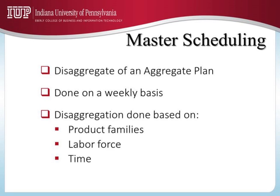Finally, disaggregation can be done based on time. That is, if the Aggregate Plan is for the next 6 to 18 months on a monthly basis, the disaggregation of the Master Schedule can be on a weekly basis. Or, if the Aggregate Plan is on a quarterly basis, the disaggregation can be on a monthly basis. Typically — and I underline the term typically because there is no hard and fast rule — in most manufacturing companies the Master Schedule is for the next 8 weeks to 24 weeks, or 2 to 6 months.